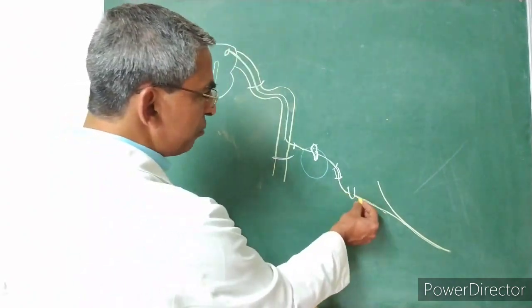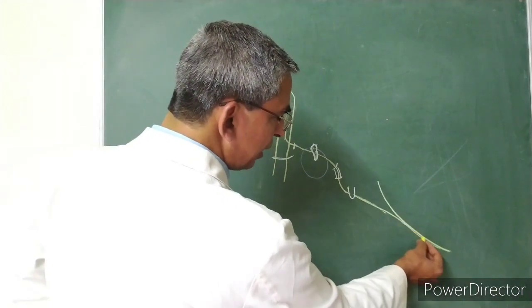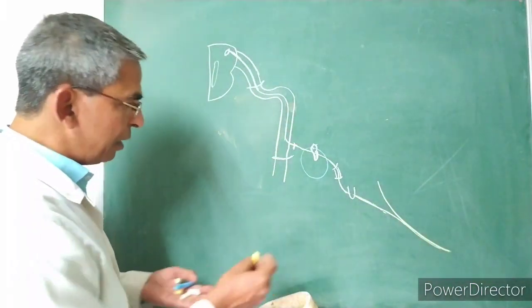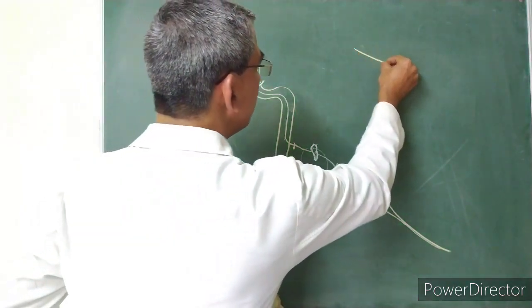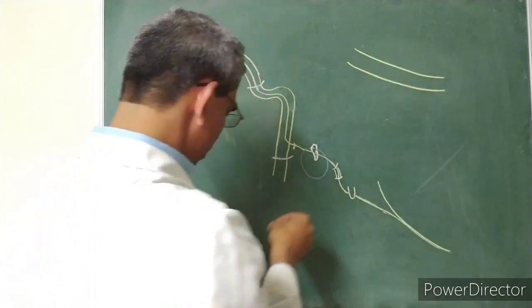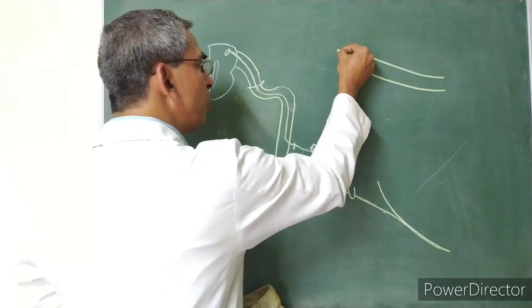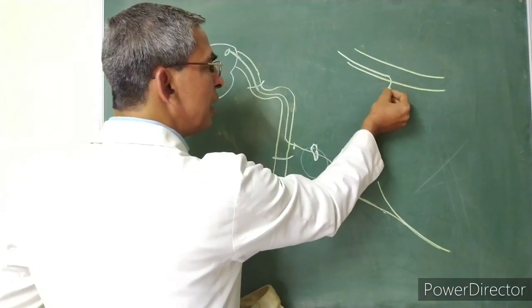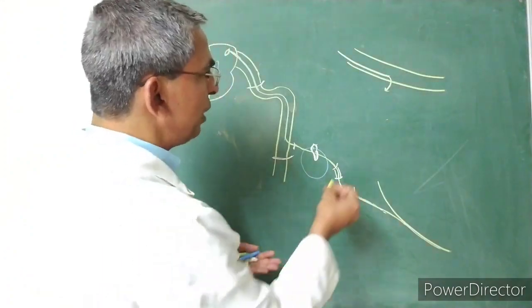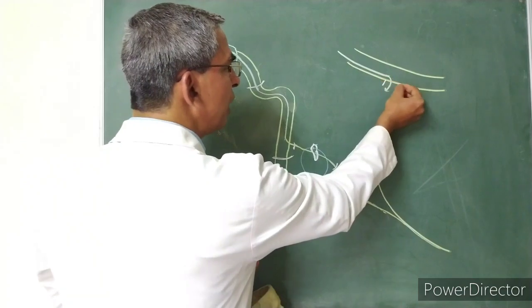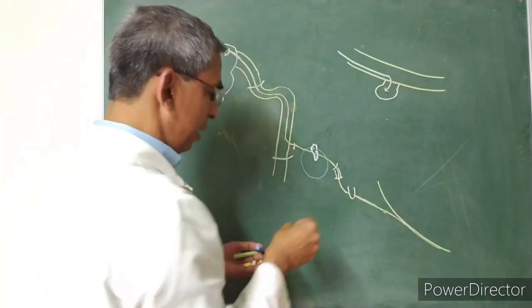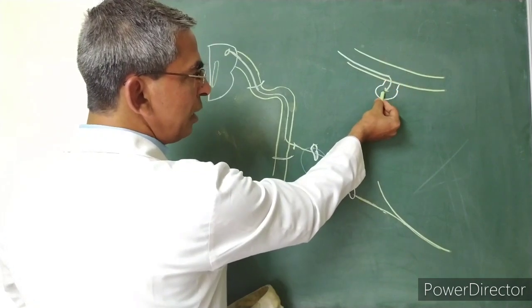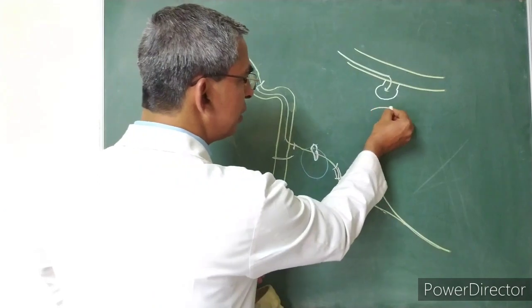The chorda tympani nerve enters into the lingual nerve, and the secretomotor fibers pass from the lingual nerve. The preganglionic fibers run through the lingual nerve, come out, and enter into the submandibular ganglion, which is situated just above the deep part of the submandibular gland.